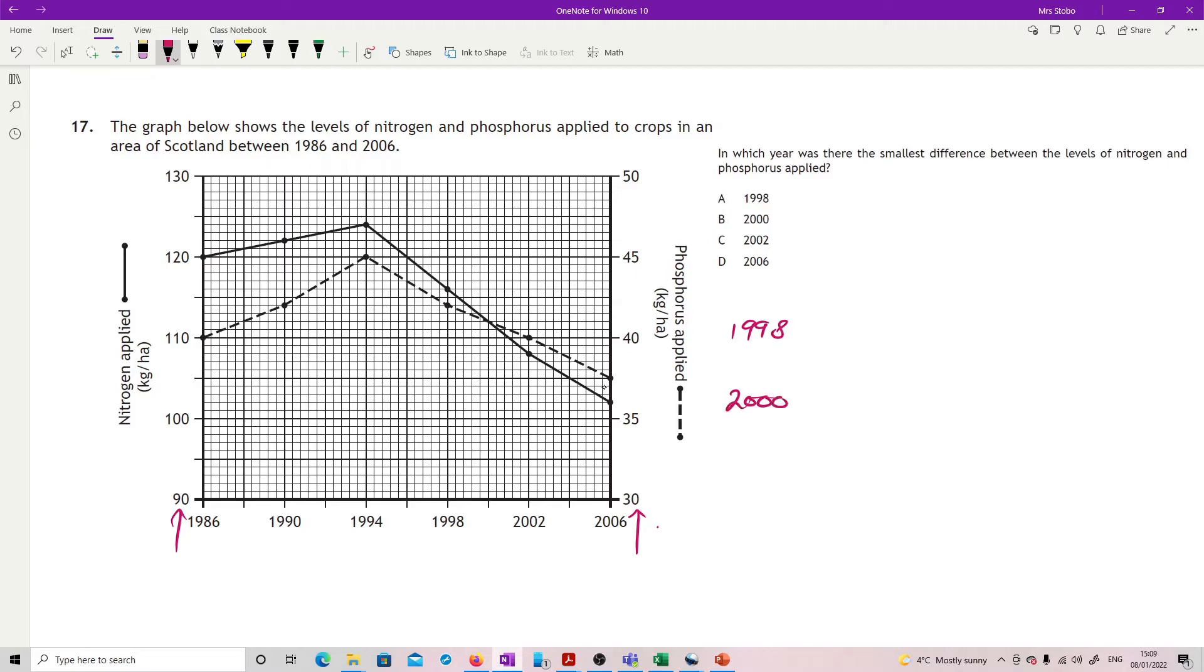Let's just read off the nitrogen first. 1998 is here, read it across, what are we going up in, just going up in ones, so that's 116. Then we have 2000, it's got this crossover point here, that's 112. Then we're dropping down here to 108, and then 2006 is actually reading across 102.